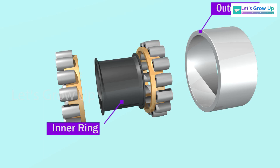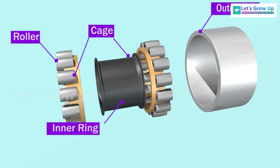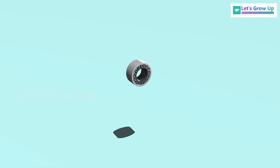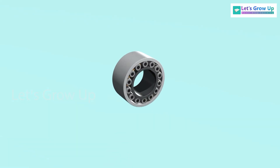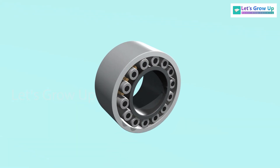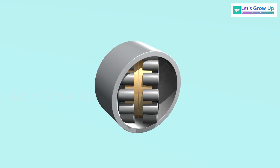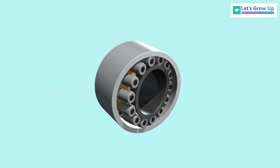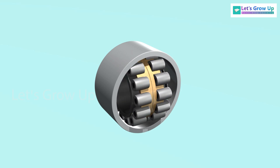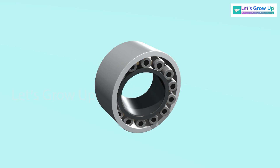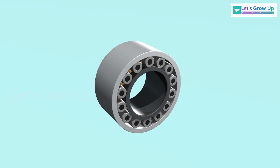The bearing parts are made of nickel-chromium alloy steels. The spherical roller bearings have self-aligning properties and therefore can automatically adjust to any deviation in the centerline of the axle.